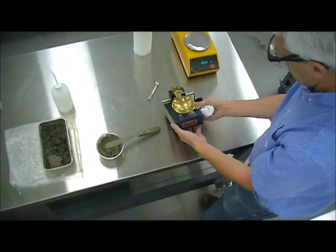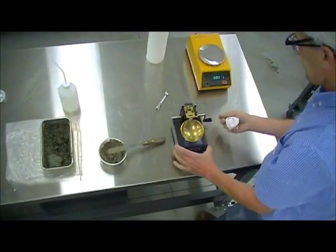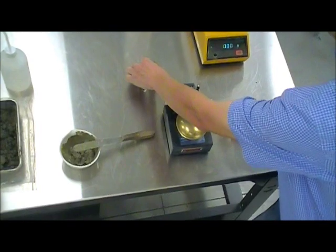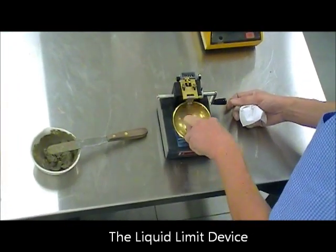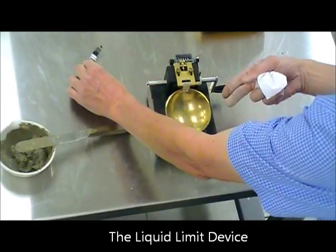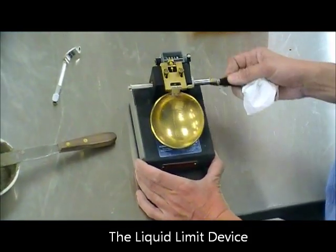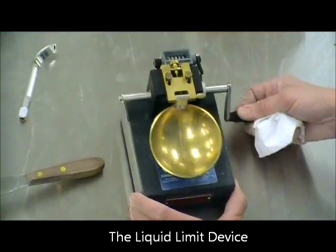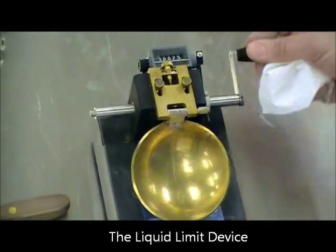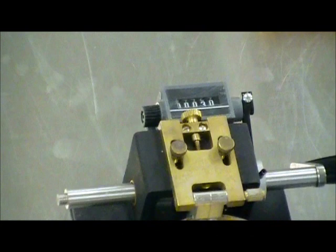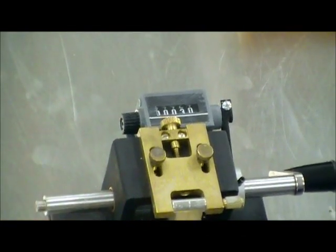Characteristics of the equipment. It's basically a brass cap where we're going to place the material here and then we're going to cut a groove. And then we're going to drop this at a rate of two revolutions per second. And we're going to count the number of revolutions that it takes for that gap to close.